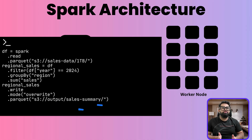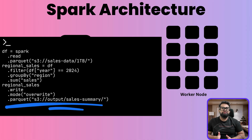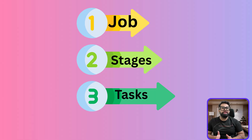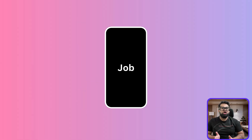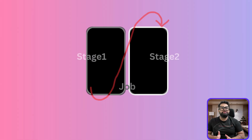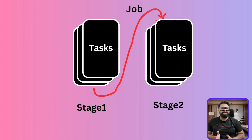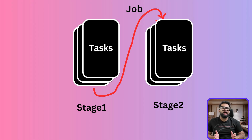As soon as the driver sees this action, it says: time to execute. Now Spark goes through three critical steps. It creates a job, breaks that job into stages, and then breaks each stage into tasks. Let's walk through exactly how that happens.